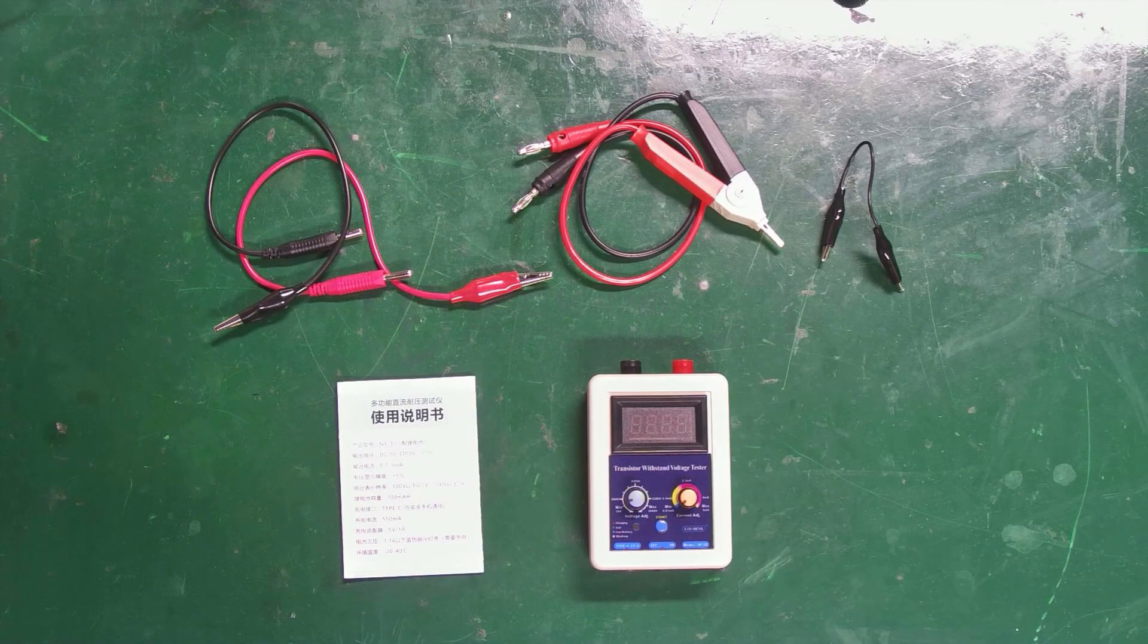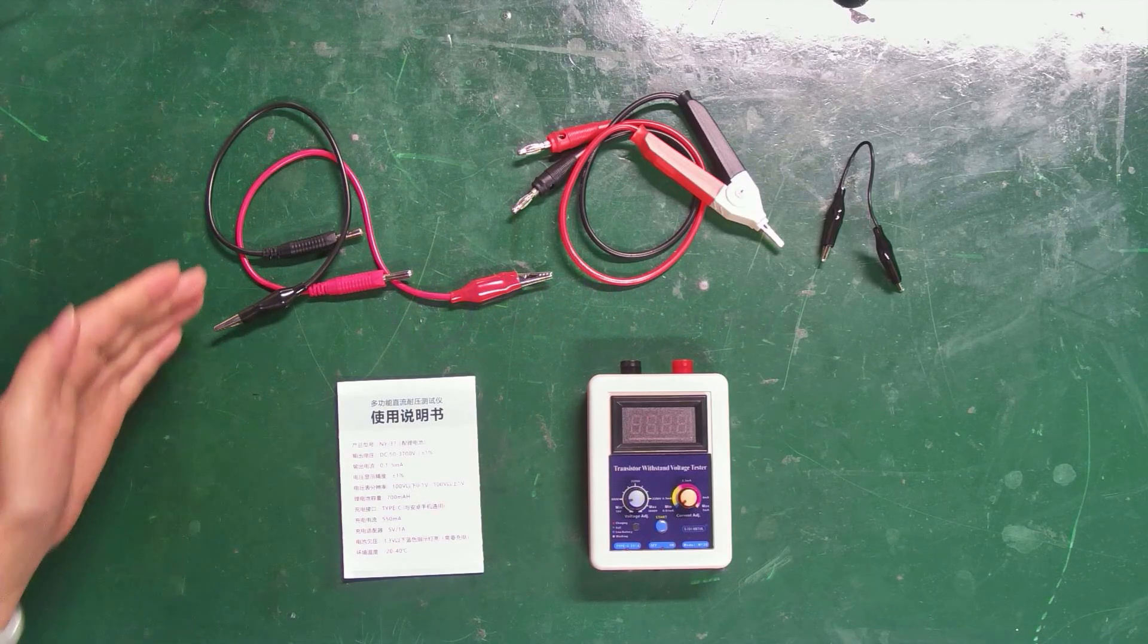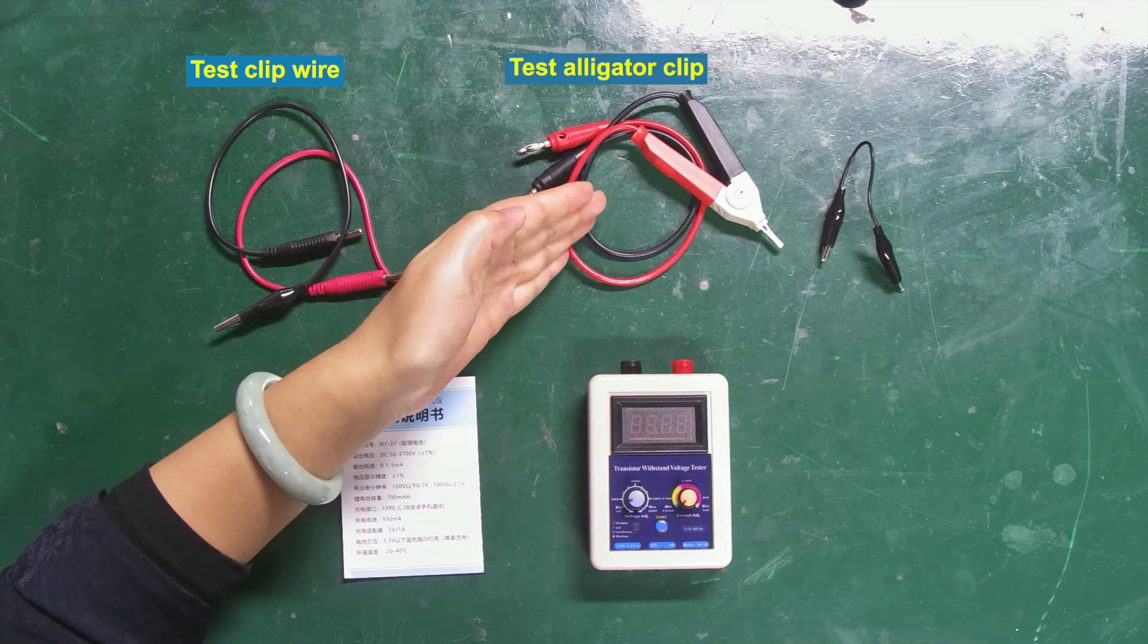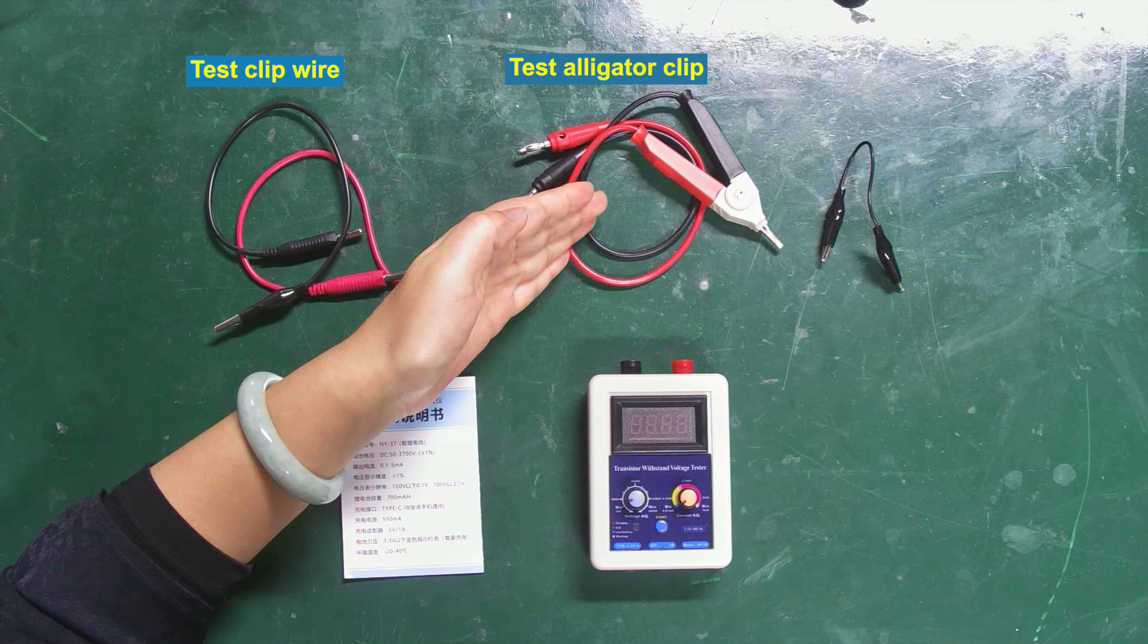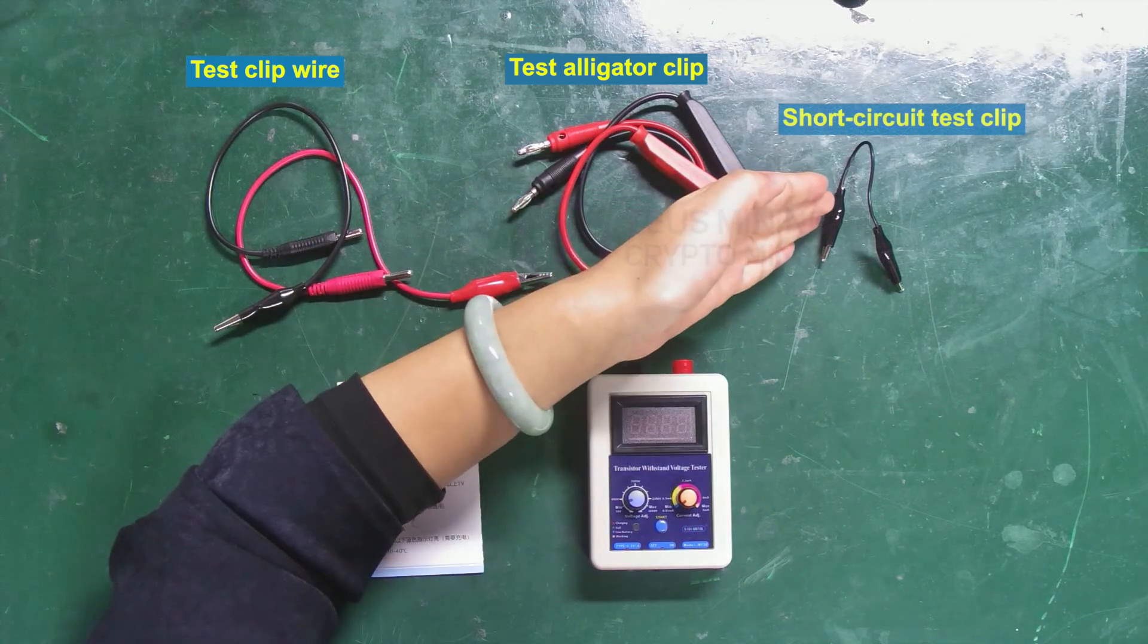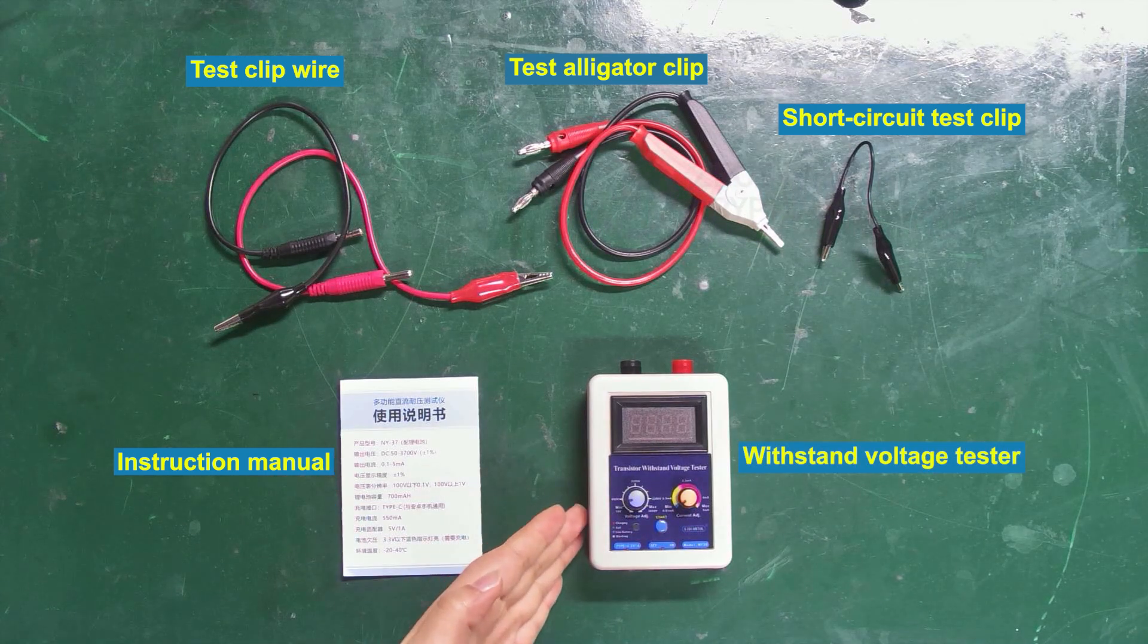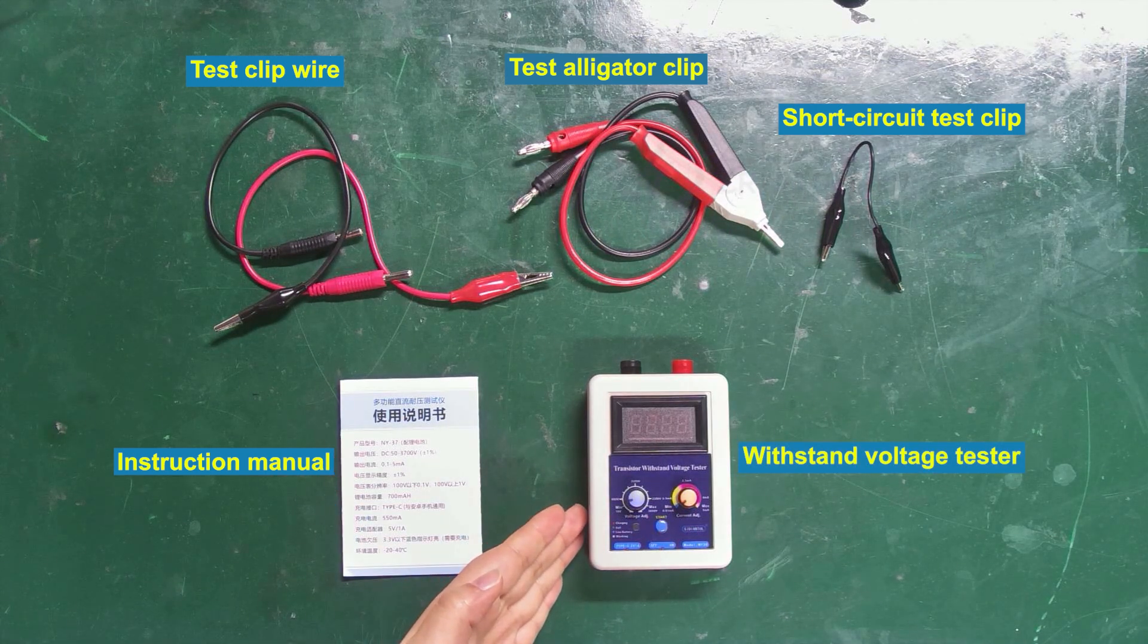Let me introduce to you what it mainly includes. This one is the test clip wire. Test alligator clips, mainly used for testing SMD components. Short circuit test clip. Instruction manual. Multifunctional transistor withstand voltage tester.